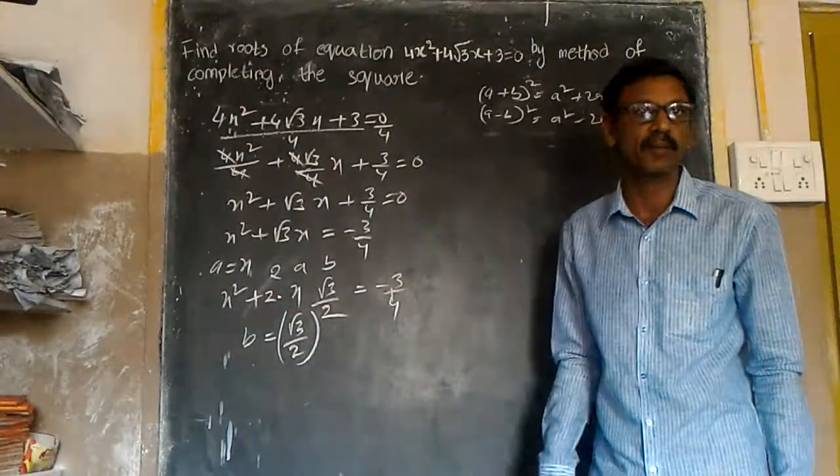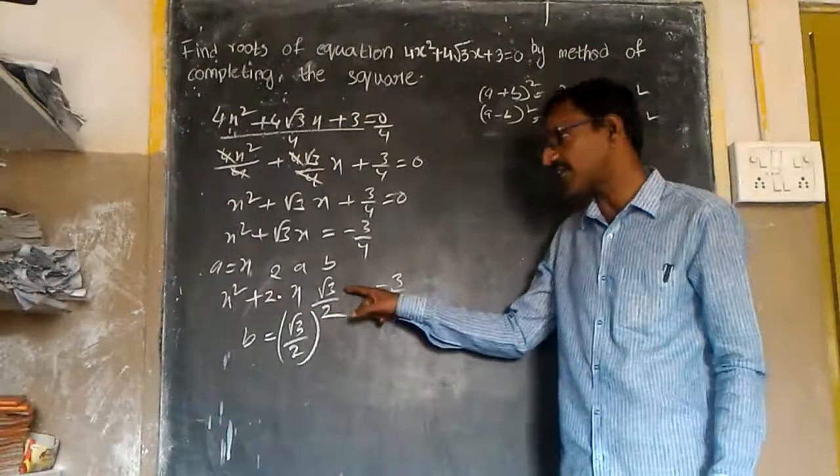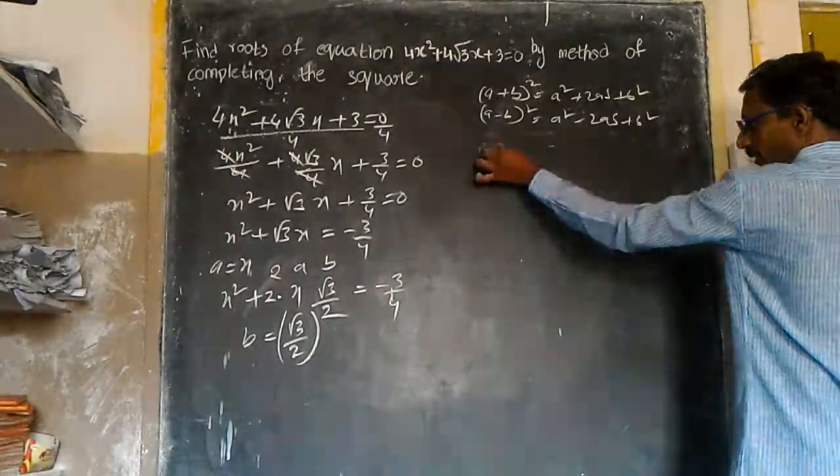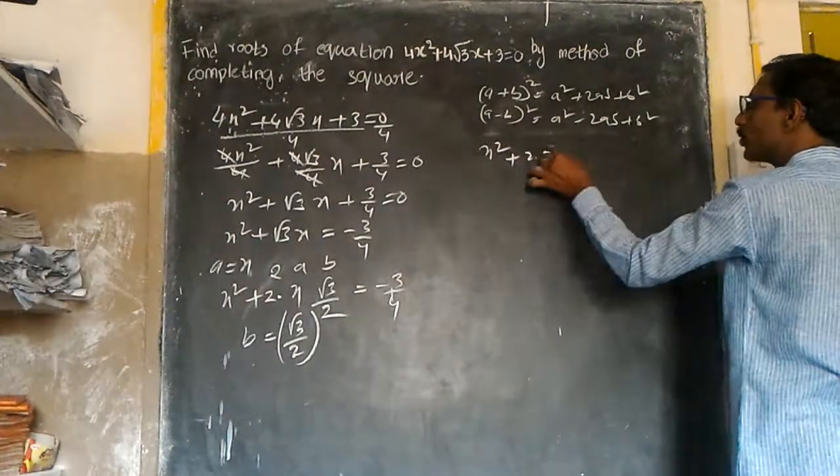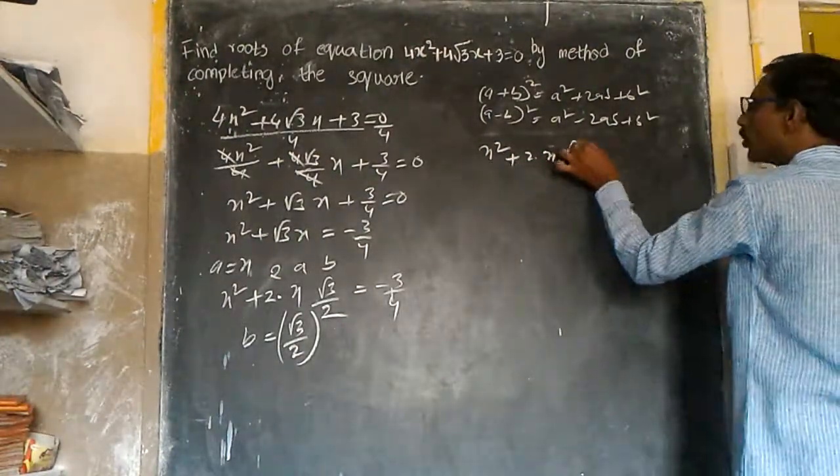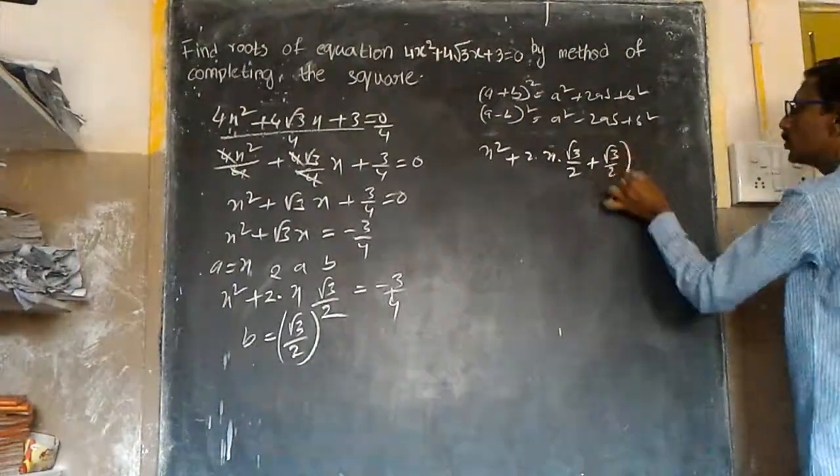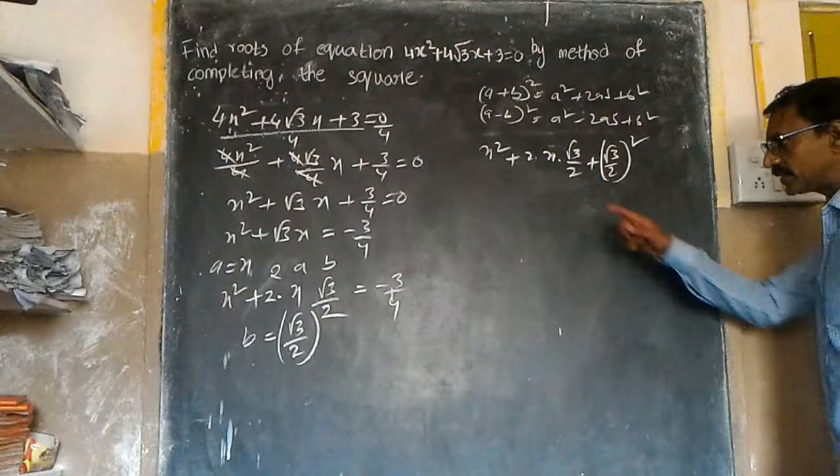So we have x² + 2·x·(√3/2) + (√3/2)² on the left side. We need to calculate (√3/2)².